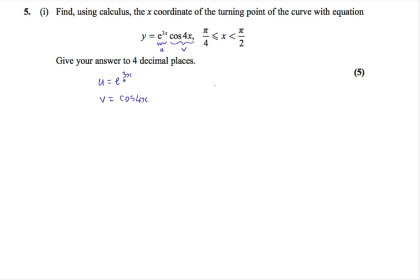Differentiating u, we have to differentiate the power, which gives us 3, multiplied by the term itself. So du dx equals 3 e to the 3x. Differentiating cos 4x, we differentiate the 4x to get 4. Differentiating cos gives us minus sine, so dv dx would be minus 4 sine of 4x.